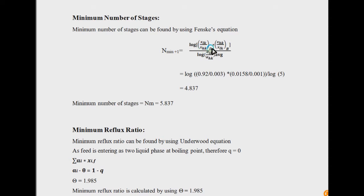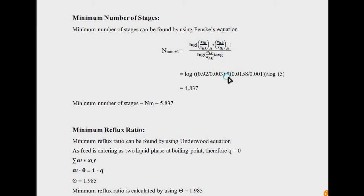The numerator is: (x_light_key / x_heavy_key) in the distillate — D for distillate — multiplied by (x_heavy_key / x_light_key) in the bottom product. This is divided by log(alpha_light_key / alpha_heavy_key)_average. It is written as average because each component has a fixed alpha, but not at every temperature and pressure. There will be different temperatures and pressures at the reboiler, at the top, and inside the column, so for calculating the number of stages based on a single value, you take the average of all.